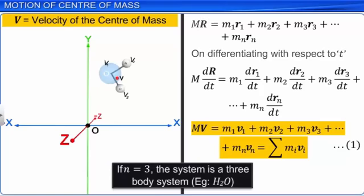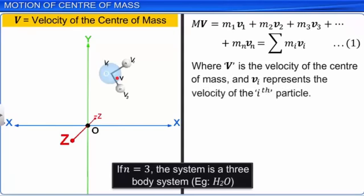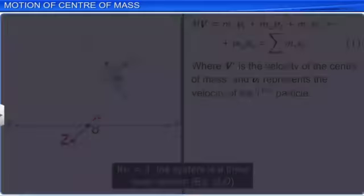Here V is the velocity of the center of mass and Vi represents the velocity of the i-th particle. Consider an example: body A of mass 0.3 kg is dropped from a certain height. At the same time, another body B of mass 0.1 kg is thrown up vertically from the ground with an initial velocity of 10 m/s. Find the initial velocity of the center of mass of the system.